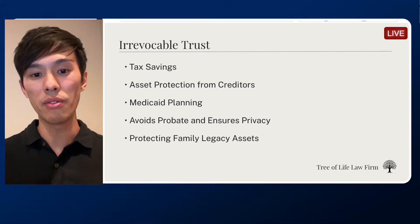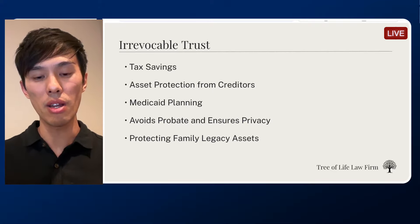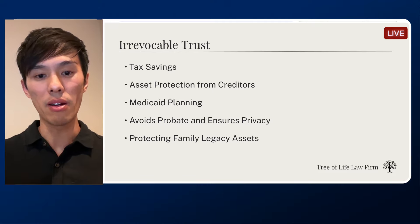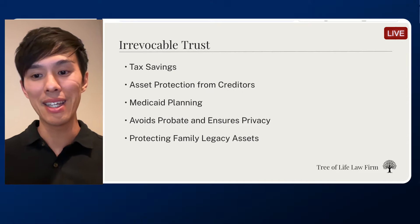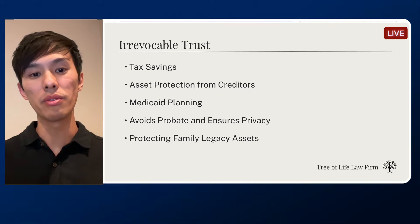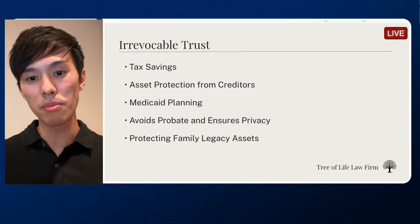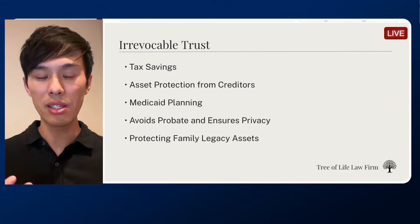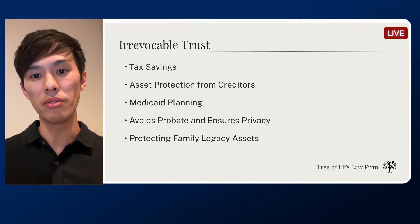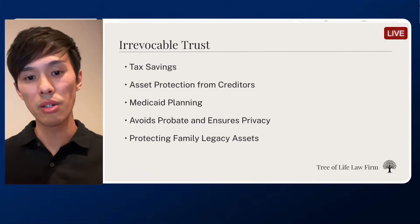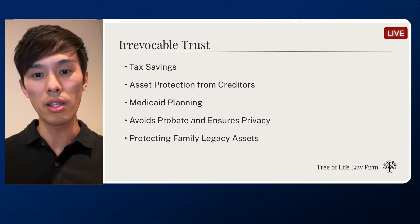An irrevocable trust can also give you income tax benefits, especially if you create charitable remainder trusts or charitable lead trusts — these are great where you can donate to charity and at the same time get income tax benefits. Tax savings is one of the main reasons why people set up irrevocable trusts. Another reason is asset protection from creditors. Because you no longer legally own these assets, creditors can't access them even if you face lawsuits or bankruptcy. This is especially valuable for those in high-risk professions like doctors or business owners.